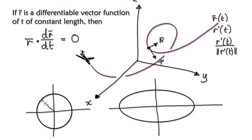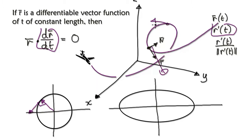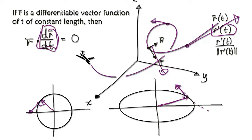When you have a vector of constant length and take its derivative, the derivative will always be a tangent to the circle traced by the tip, and that tangent is always at a right angle. So whatever direction it's pointing, when you take the derivative it's going to be tangent to that circle — and you can see it's always at 90 degrees.